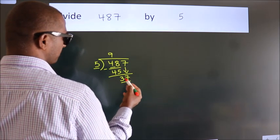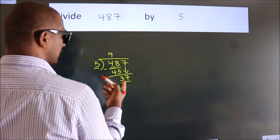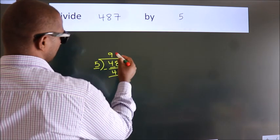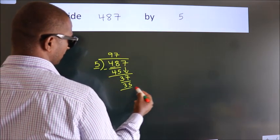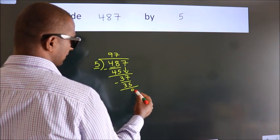So, 37. A number close to 37 in the 5 table is 5 sevens, 35. Now we subtract and get 2.